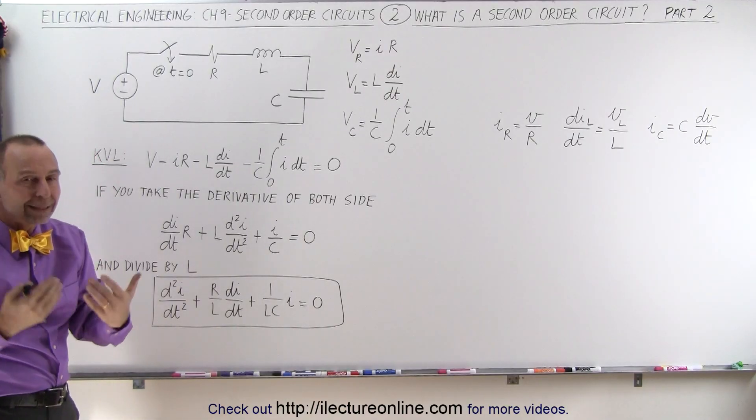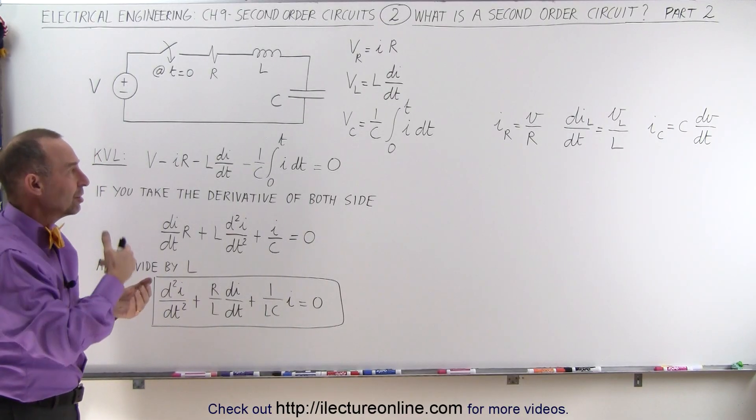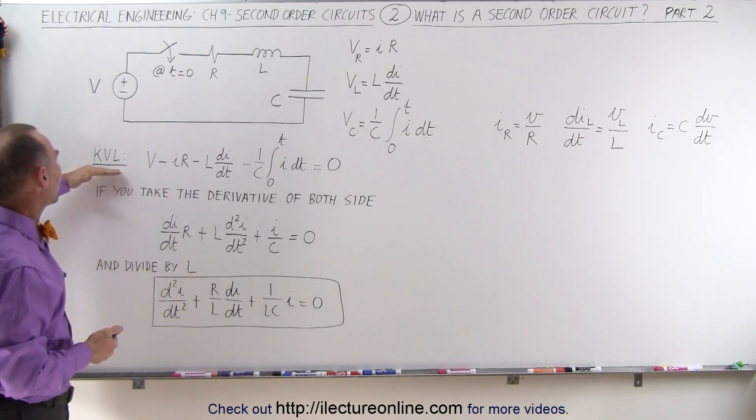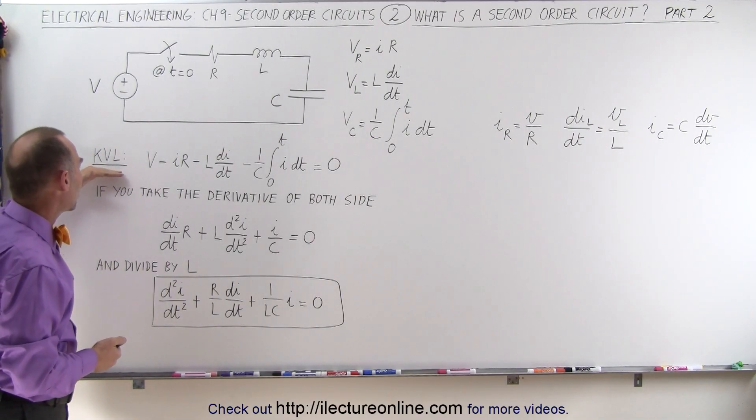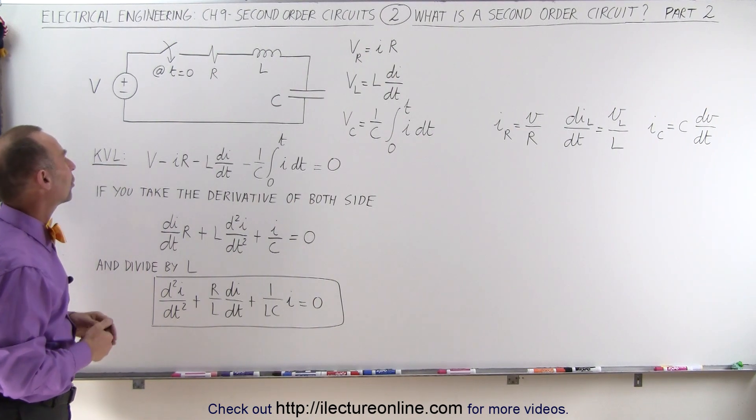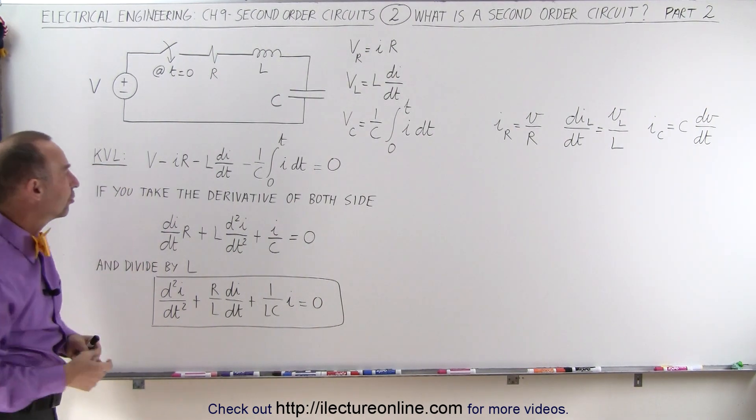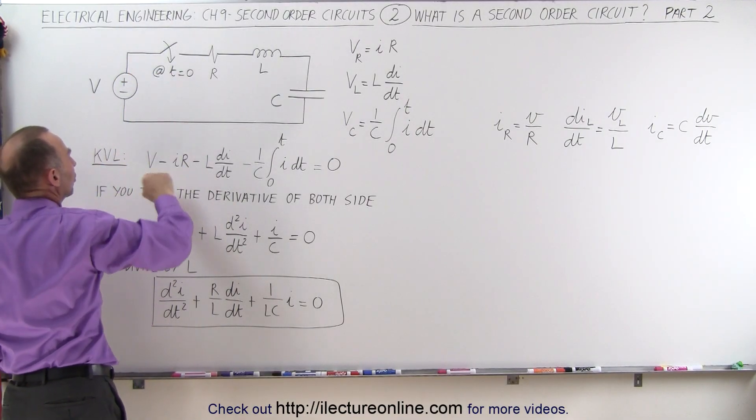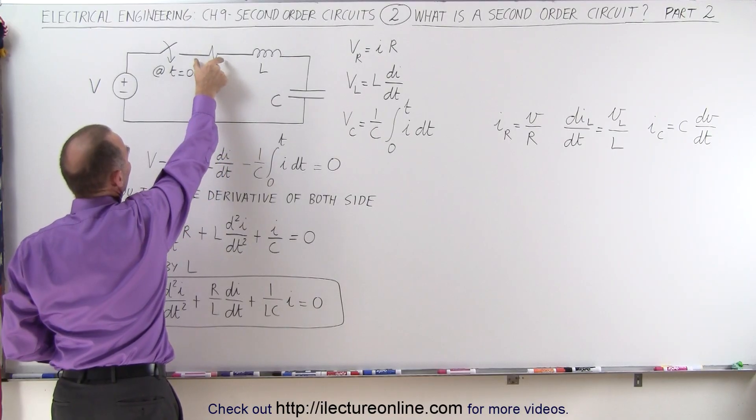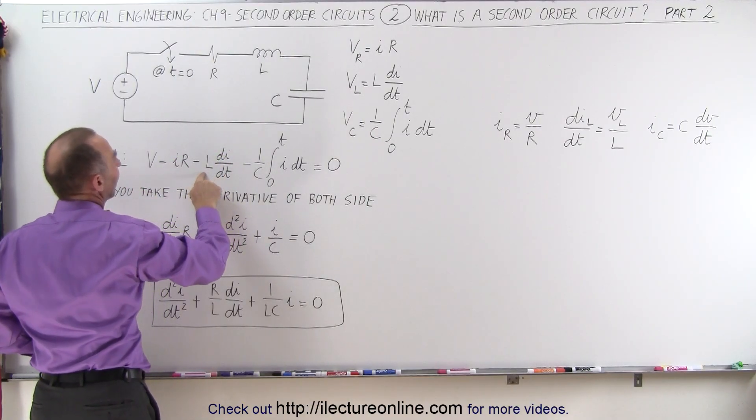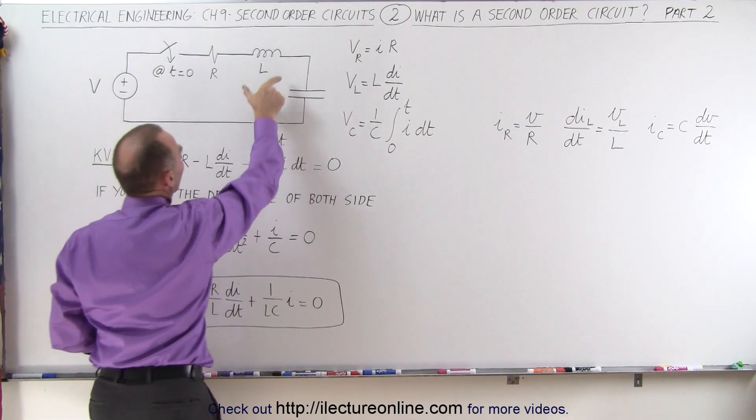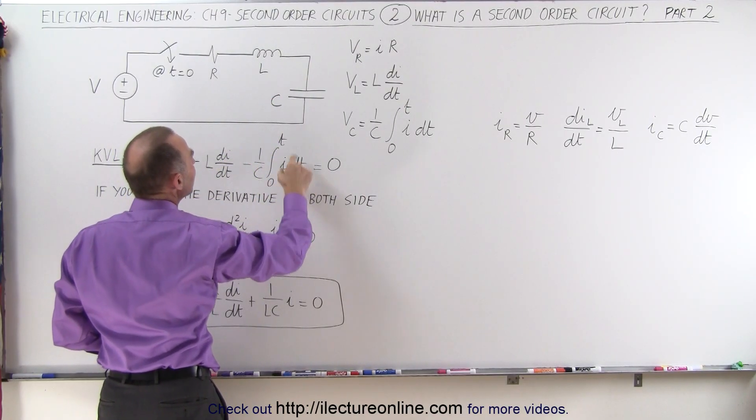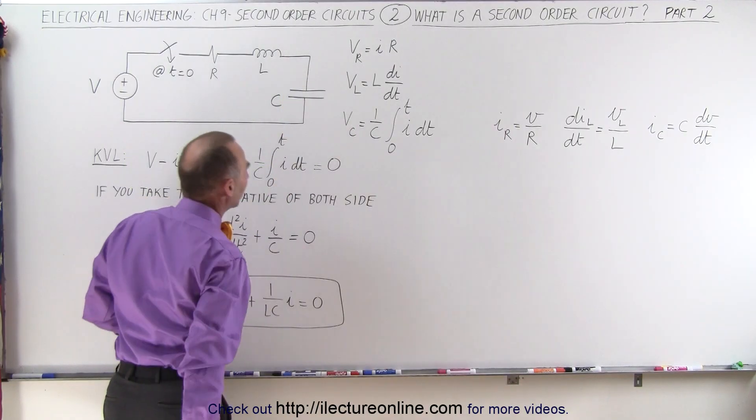So how do we calculate the various things in the circuit—the initial conditions, the current, the voltage drops across the various components? Well, we set up what we call a KVL equation, a Kirchhoff voltage loop equation where we go around the circuit and add up all the voltages. So we add up the voltage of the source once the switch is closed. The current times the resistor is the voltage drop across the resistor. L times di dt is the voltage drop across the inductor. And one over c times the integral of i dt is the voltage drop across the capacitor.